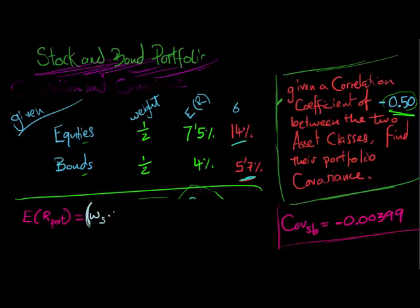So the first bracket are stocks, so the weight of stocks multiplied by the expected return on stocks plus the weight of bonds multiplied by the expected return on bonds.